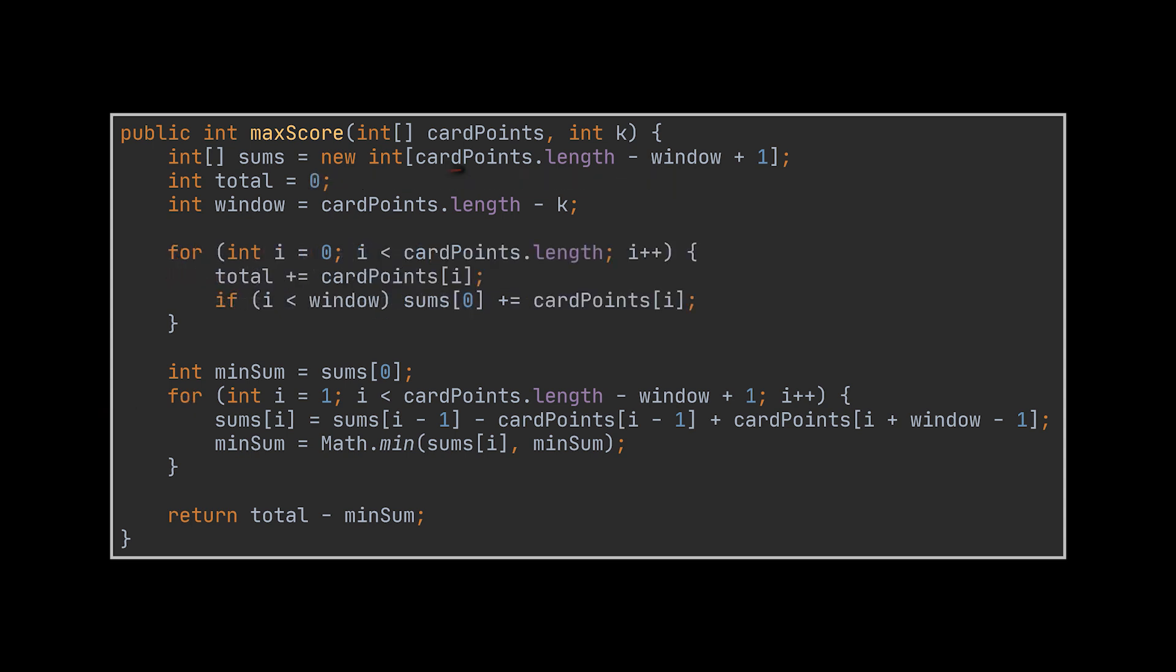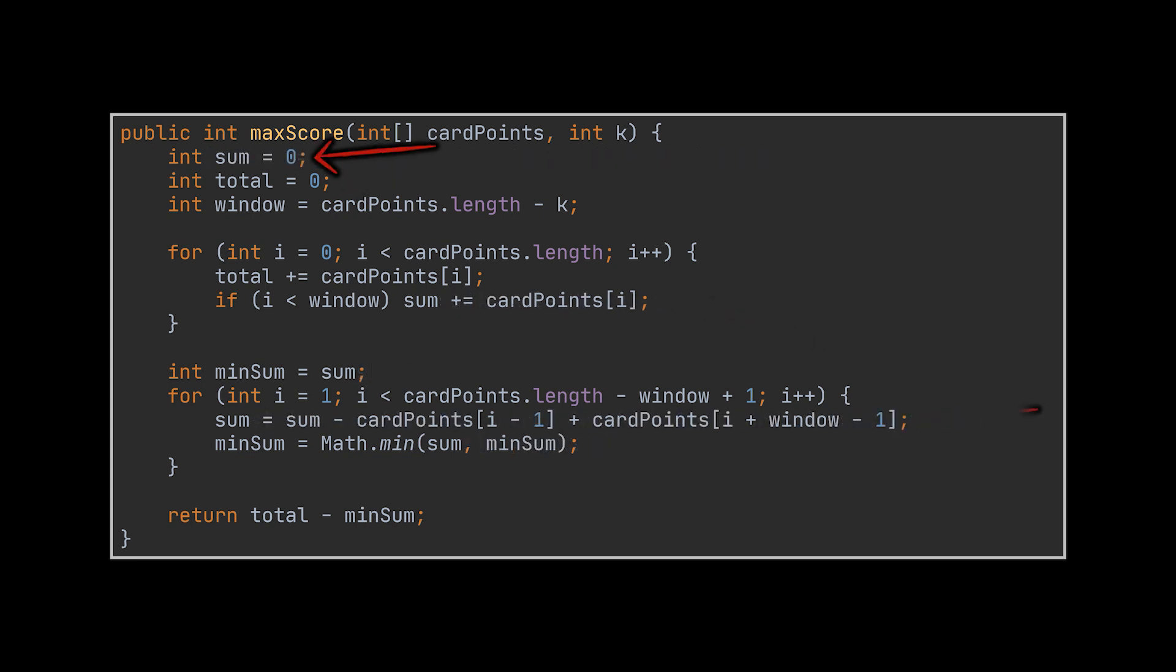One first minor optimization we can do at this point is integrate the total sum we are calculating into the loop we already have, instead of fetching it separately, since inside this loop we are in fact traversing the elements of the array. Another optimization would be to basically get rid of the array storing the local sums of the windows and replace it with one single variable, since all we need is the previous sum calculated when attempting to retrieve a new one.